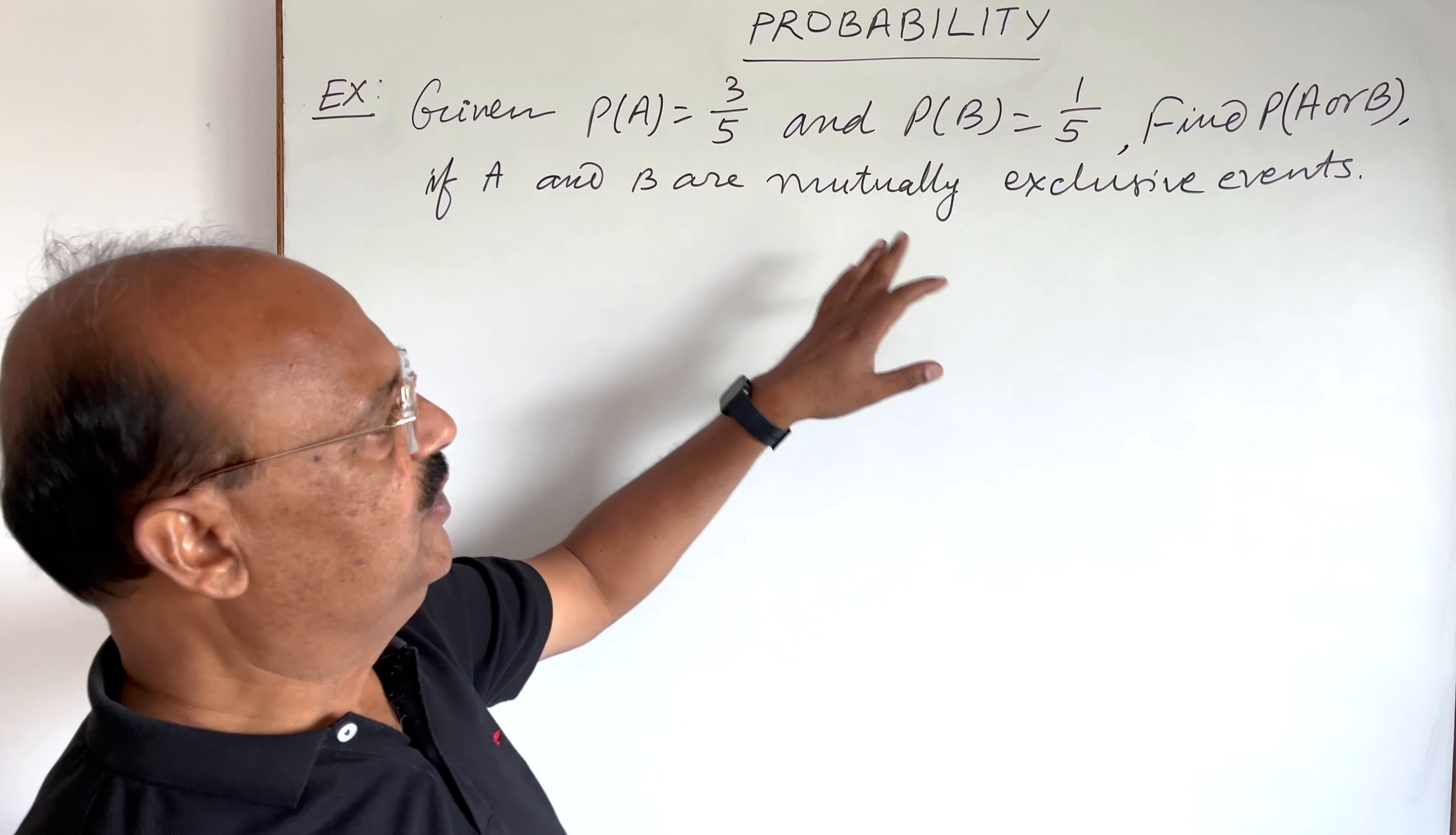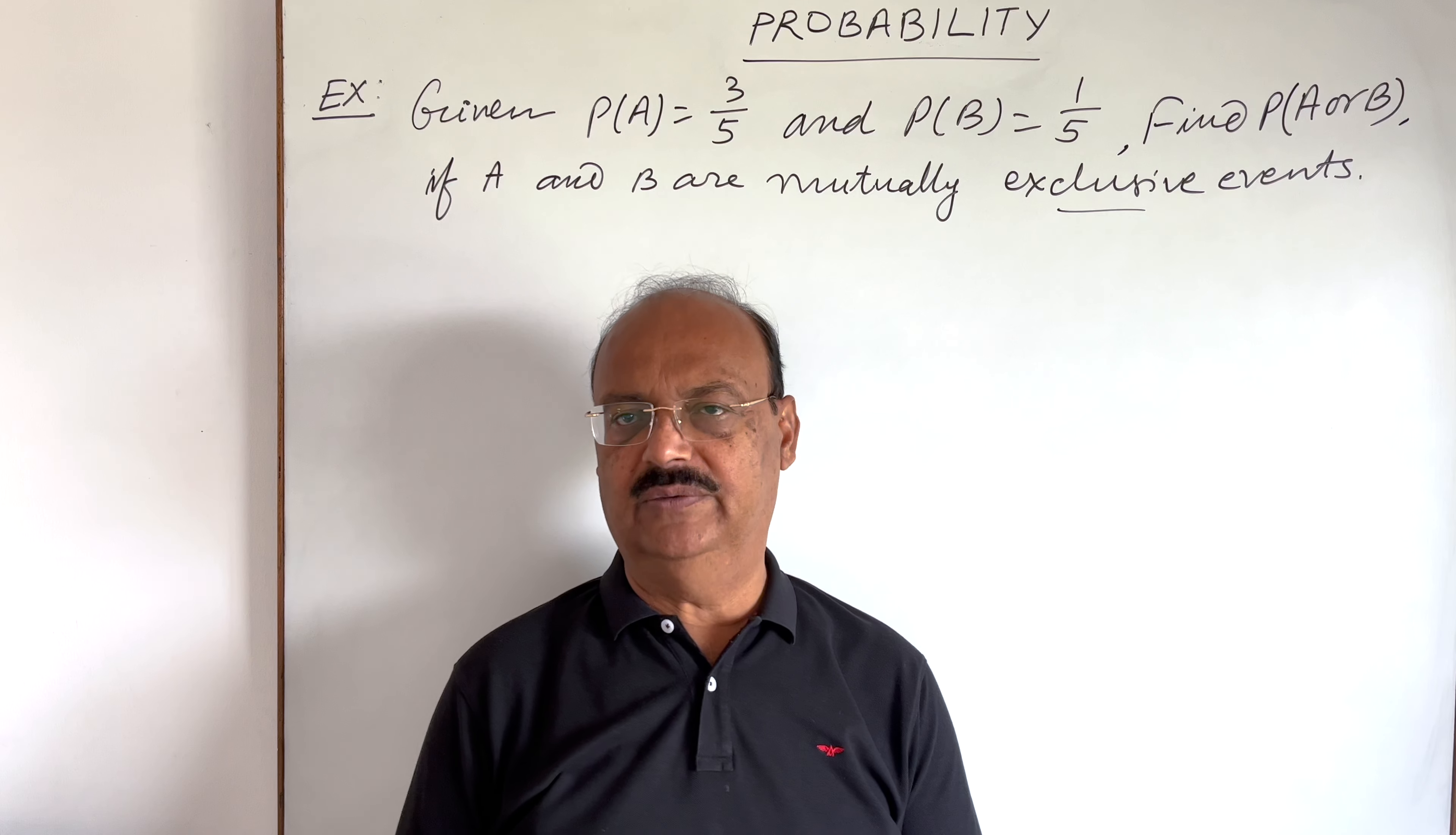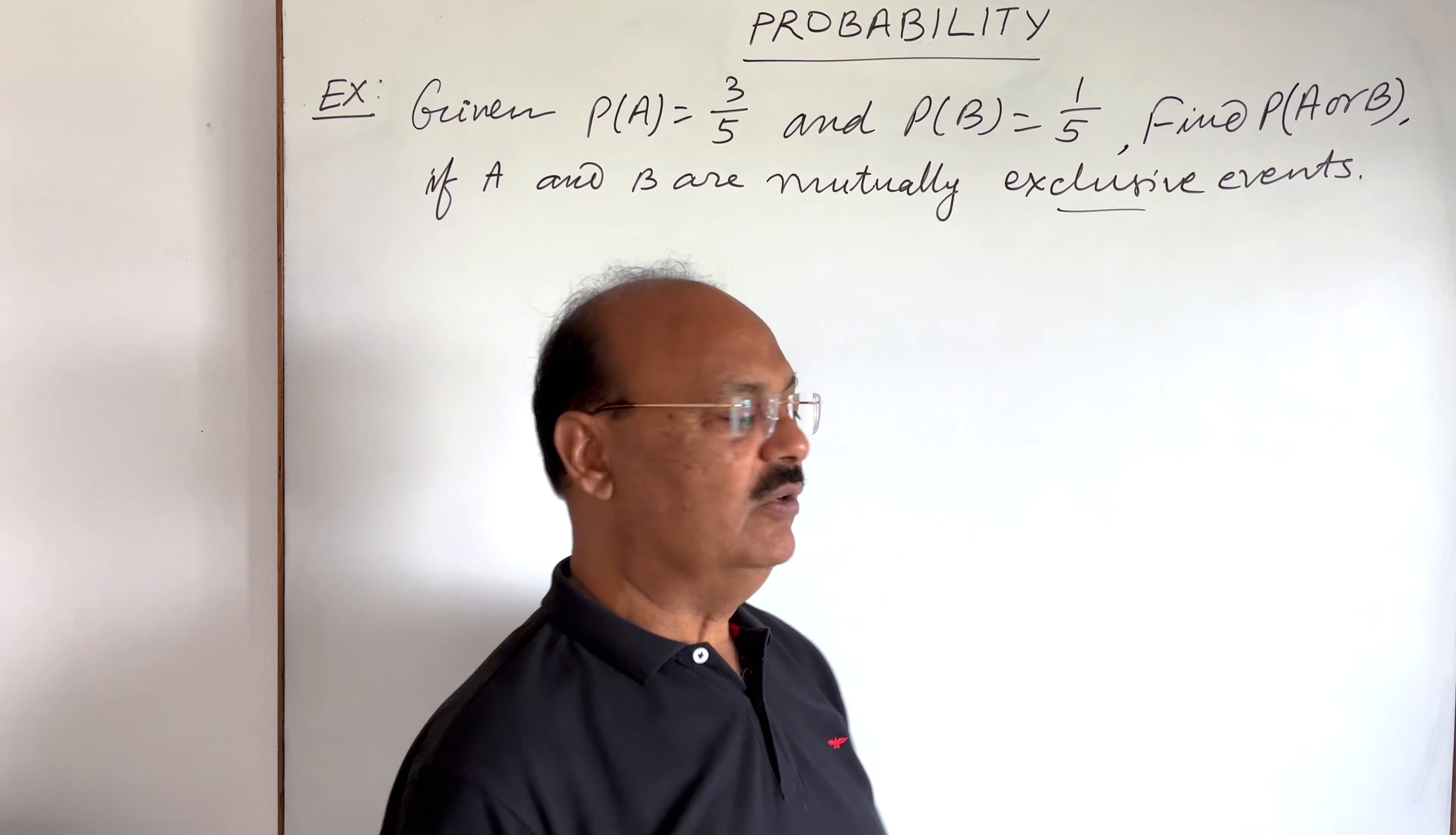If A and B are mutually exclusive events, here the condition is given that A and B are mutually exclusive events. Exclusive means no element is common in these two sets A and B, both the sets A and B are disjoint sets. Then these events A and B are known as exclusive events, so here we use the formula.